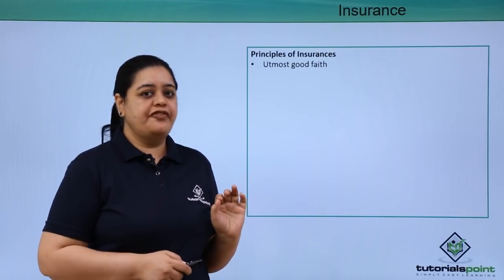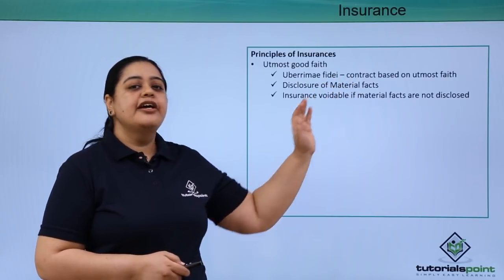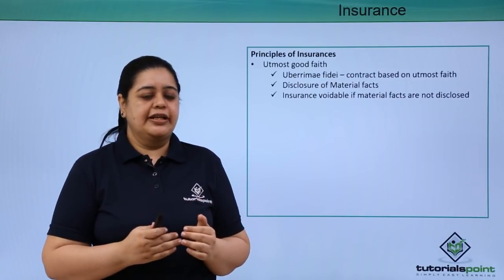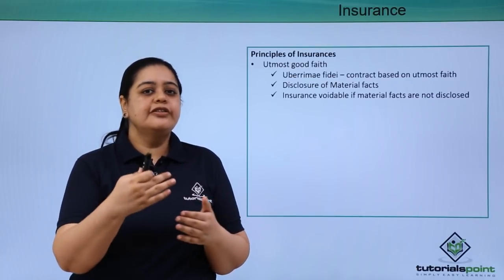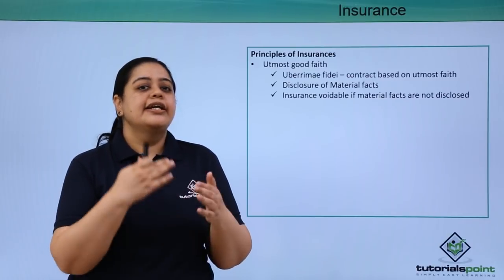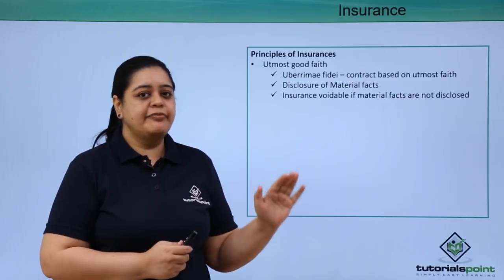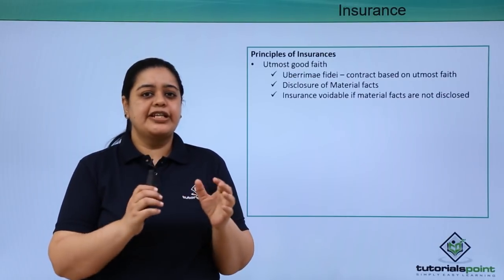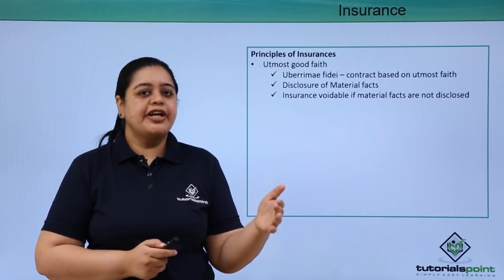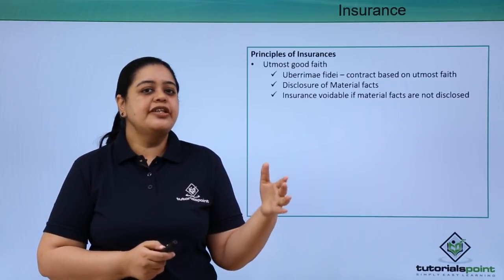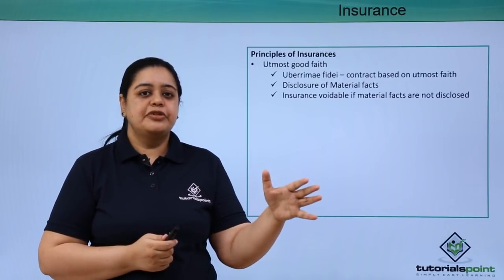The first principle of insurance is utmost good faith, based on the concept of uberrima fides. It says the contract is based on utmost faith — when parties come to contract, the insured must give all the requisite details to the insurance company. Disclosure of material facts must be done. For example, if you want to insure your car, you shouldn't hide the fact that your car was involved in an accident before, or that you have changed the engine or important parts of the car.